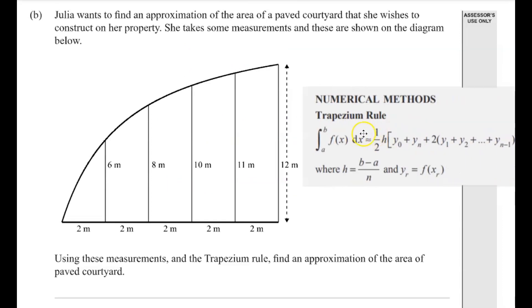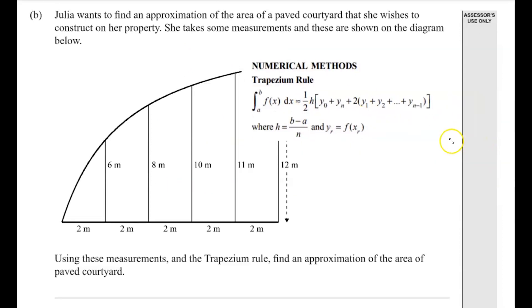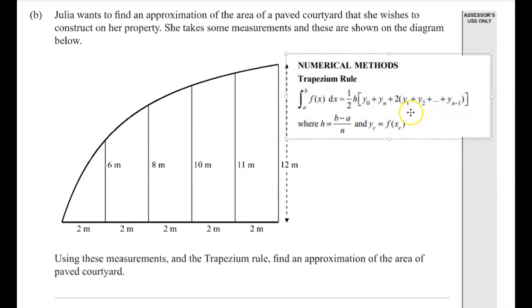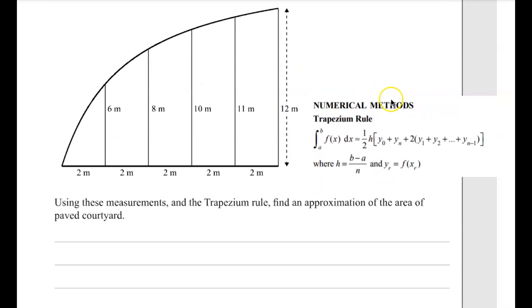Part B is about the trapezium rule, so it's about taking this formula that we have from the formula sheet and substituting in the values for this question. So we've got the area is approximately equal to half times the height, which we don't even need to work out the height they've given it to us, it's 2.